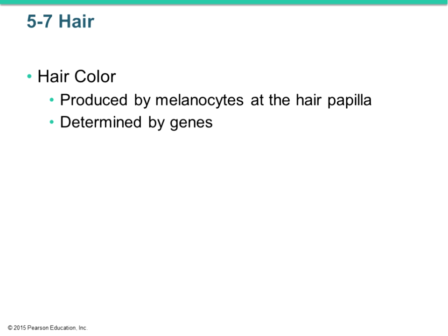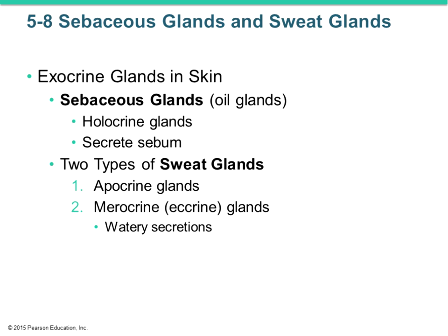Next accessory structures are glands — specifically sebaceous glands and sweat glands. Sebaceous glands are oil-based glands that produce sebum, made of holocrine-type glands where the entire cell is shed. Sweat glands are actually two types: apocrine sweat glands — where the apical portion of the cell is shed — and merocrine sweat glands, which are just water secretions where the cell remains completely intact.